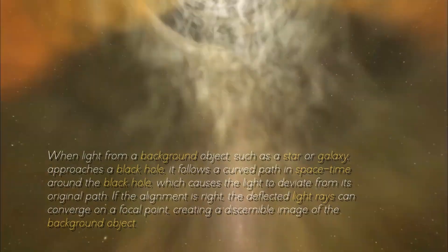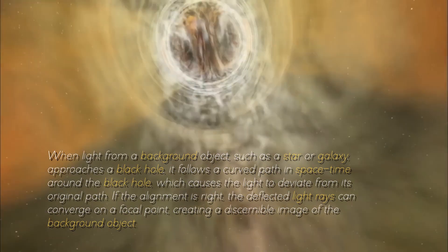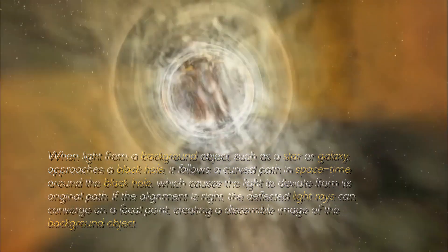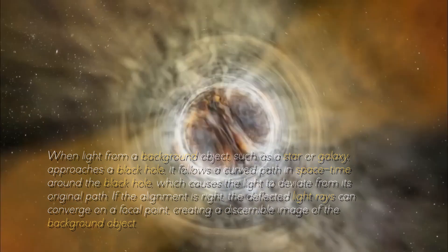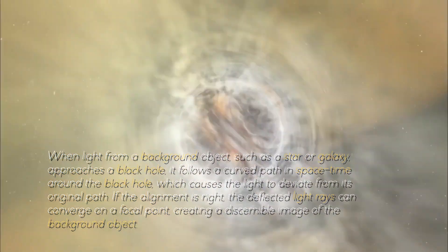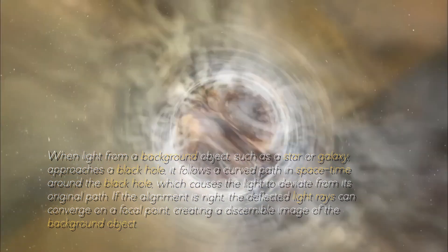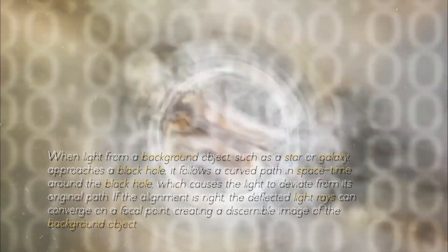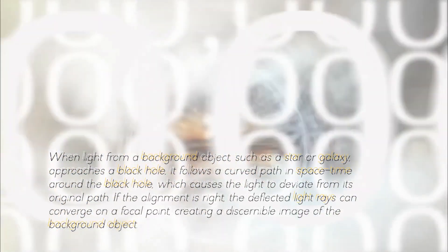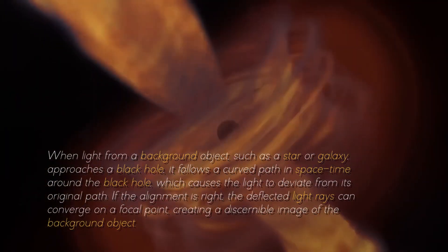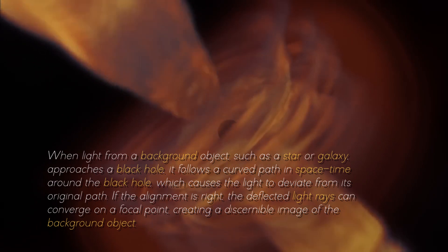When light from a background object, such as a star or a galaxy, approaches a black hole, it follows a curved path in spacetime around the black hole, which causes the light to deviate from its original path. If the alignment is right, the deflected light rays can converge on a focal point, creating a discernible image of the background object.